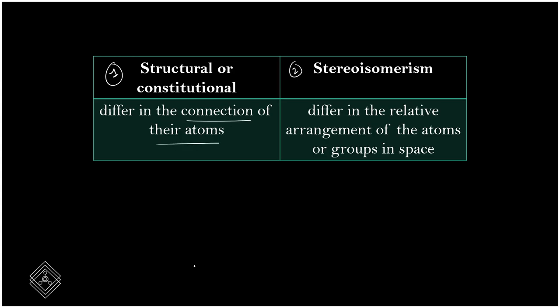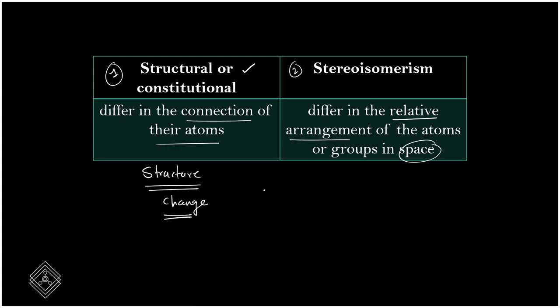In structural isomerism, the connectivity of atoms — the structure of the molecules — differs. Whereas in stereoisomerism, the molecular formula is the same, the connectivity is the same, but the relative arrangement in space is different. Stereoisomerism is further divided into two categories: geometrical isomers and optical isomers.